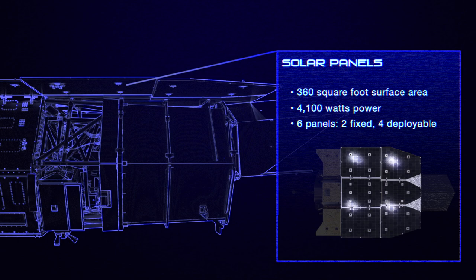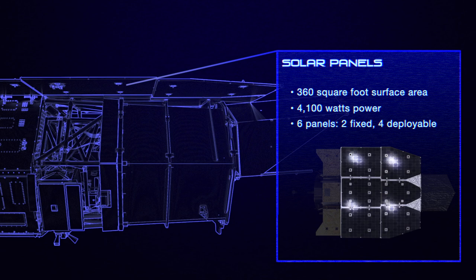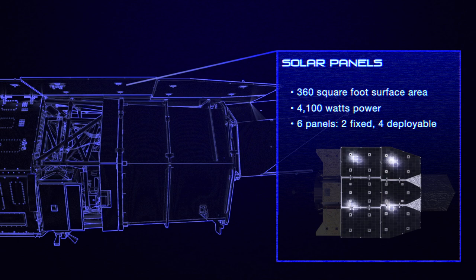The spacecraft's solar panels provide its power by converting sunlight into electricity. They also shade the spacecraft, helping to keep its instruments at their design temperatures. The solar panels will be able to provide 4,100 watts of power, enough to run two commercial microwave ovens.